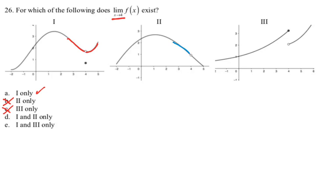Let's do it for graph 2. From the left, we approach that value. From the right, we approach that value. They're approaching the same value, so 2 also works. Since 2 also works and the only other options were 1 and 2 or 1 and 3, that has to be the answer. But let's look at 3 anyway. From the left, the limit looks like 3-ish. Then the limit from the right looks like 2. The limit from the left exists, the limit from the right exists, but they're not equal to each other, so the limit does not exist.